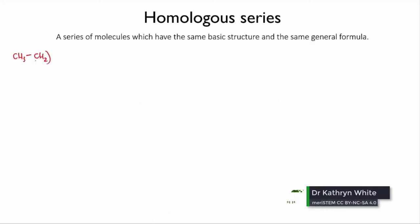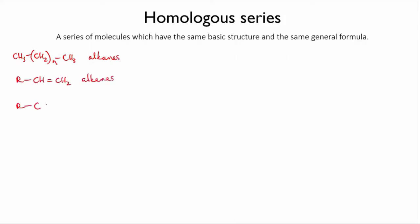We've now looked at a number of types of organic molecules. Think of the alkanes, alkenes and alkynes, or the alcohols or the carboxylic acids.